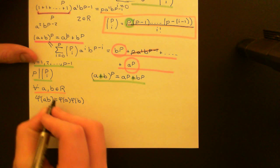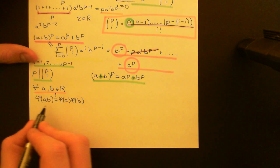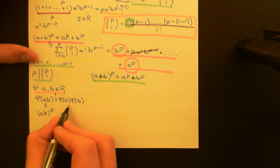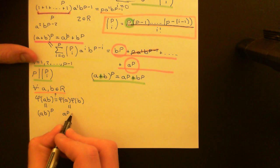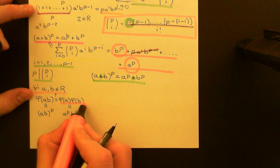So we want to check that this is true. Let's firstly apply phi to A times B, working out the left-hand side. We're just going to get A times B to the power of P. And on the right-hand side, A to the power of P is phi of A, and B to the power of P is phi of B — we're just applying the definitions of the Frobenius endomorphism.